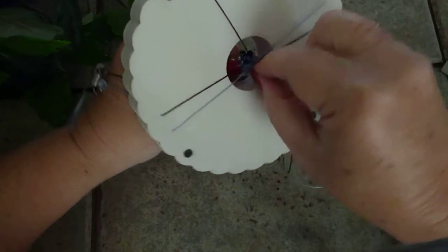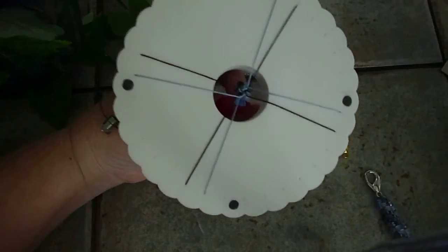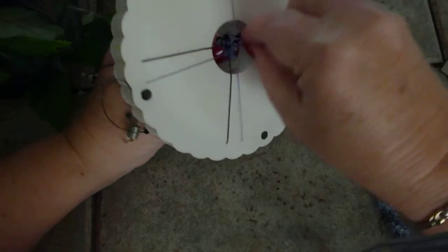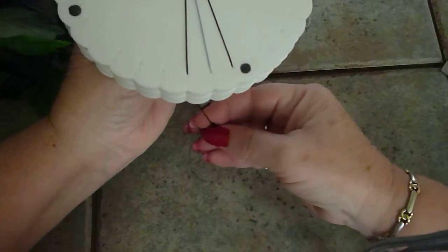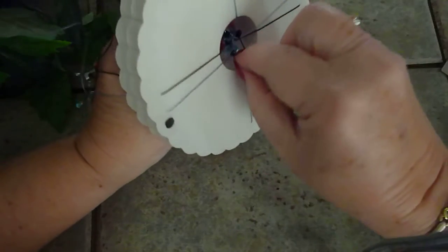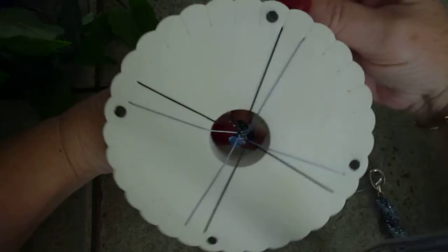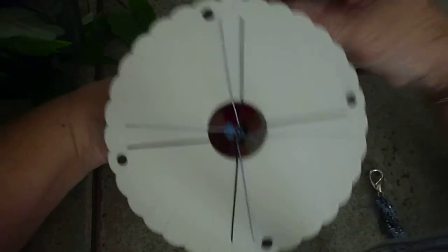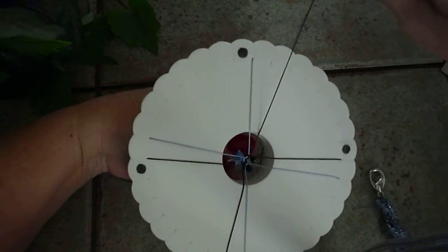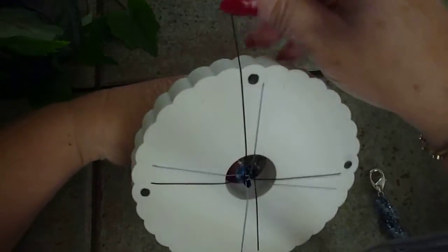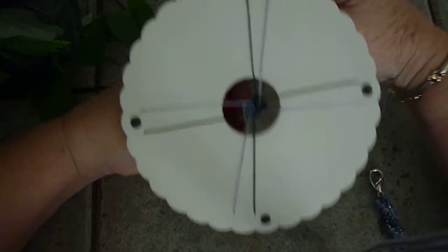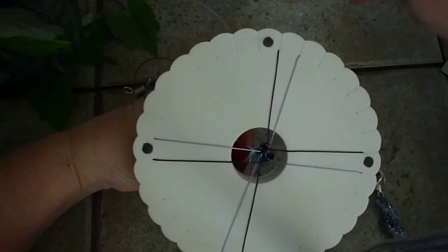So anyway, you would continue on adding your beads. I normally, on a, with a key fob, I use nine beads per cord. It seems to give it a nice length. And it doesn't, it just seems to be a perfect amount of beads.